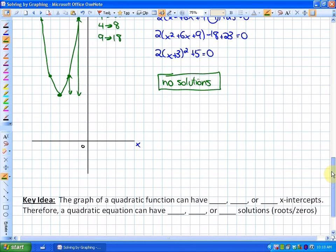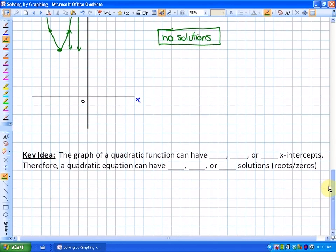Finally, just some key ideas for this lesson is that the graph of a quadratic function, as we've learned in the first example, it can have 1 x-intercept, or from the second example, 2 x-intercepts, or from the third example, 0 x-intercepts. Therefore, a quadratic equation can have 0, 1, or 2 solutions, which are also called roots or zeros.